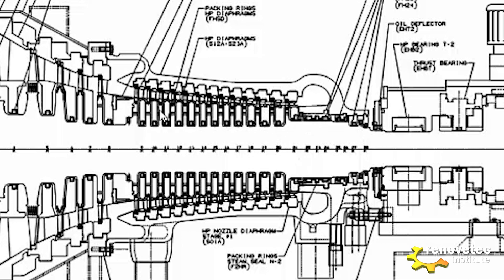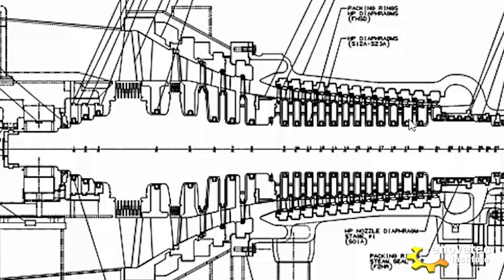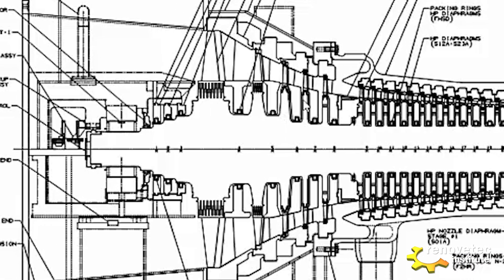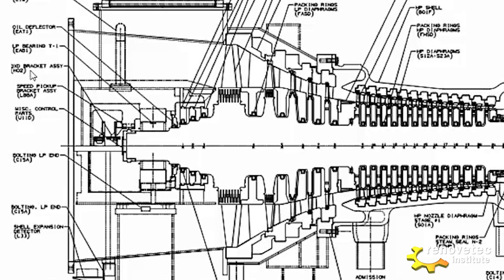Here we can see the blades, which are connected with the shaft. And there, connected with the casing, are the vanes — blades and vanes. We are looking at the different stages, and there is the last stage. Finally, we have here another package of the labyrinth seal, and another labyrinth seal to avoid leakage at the outlet. And this is the outlet.